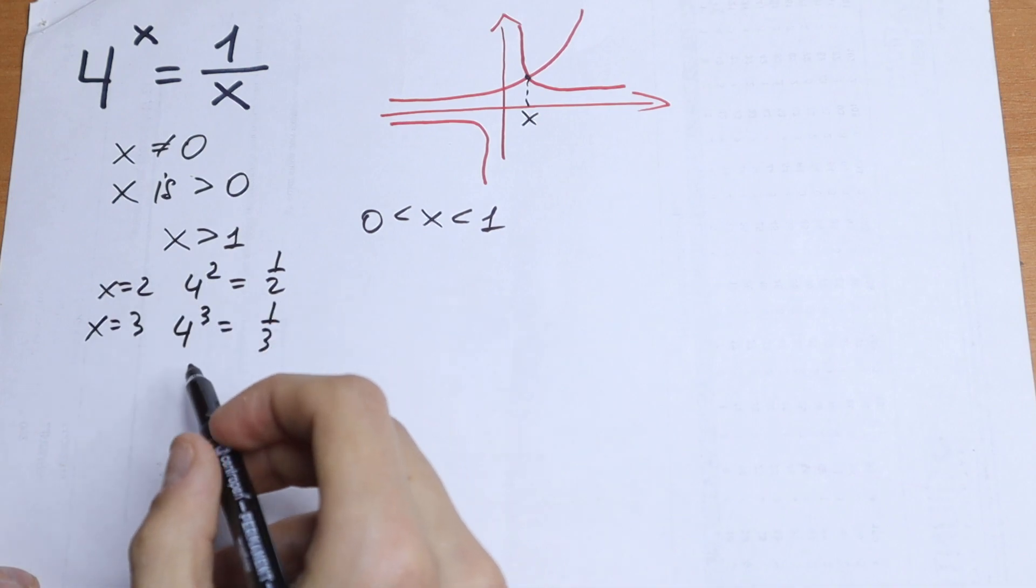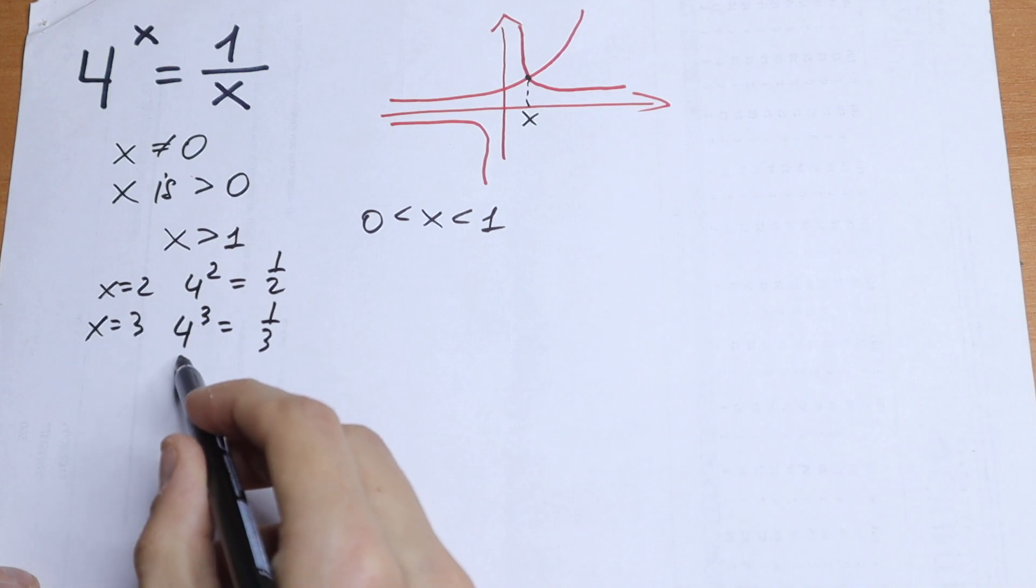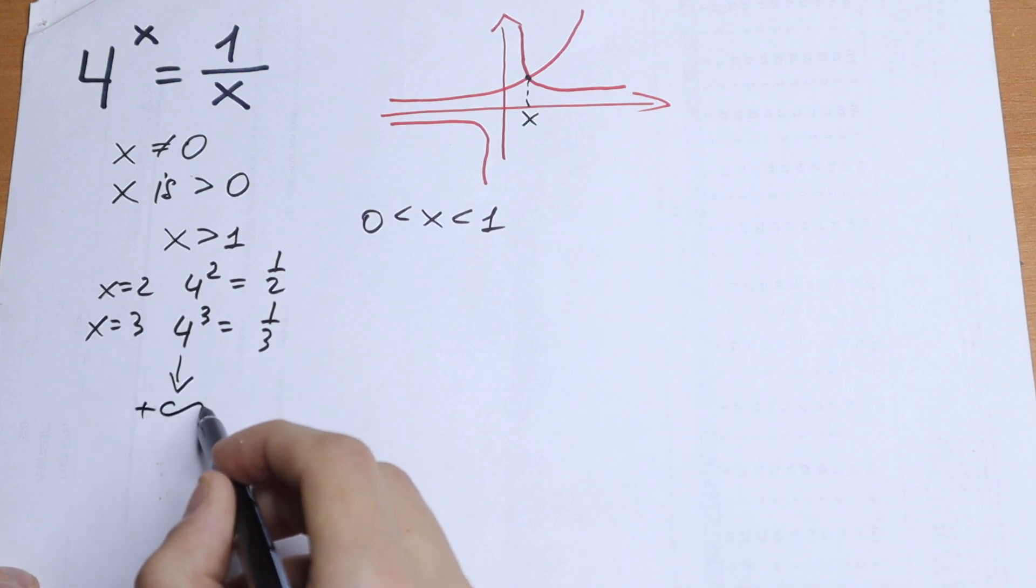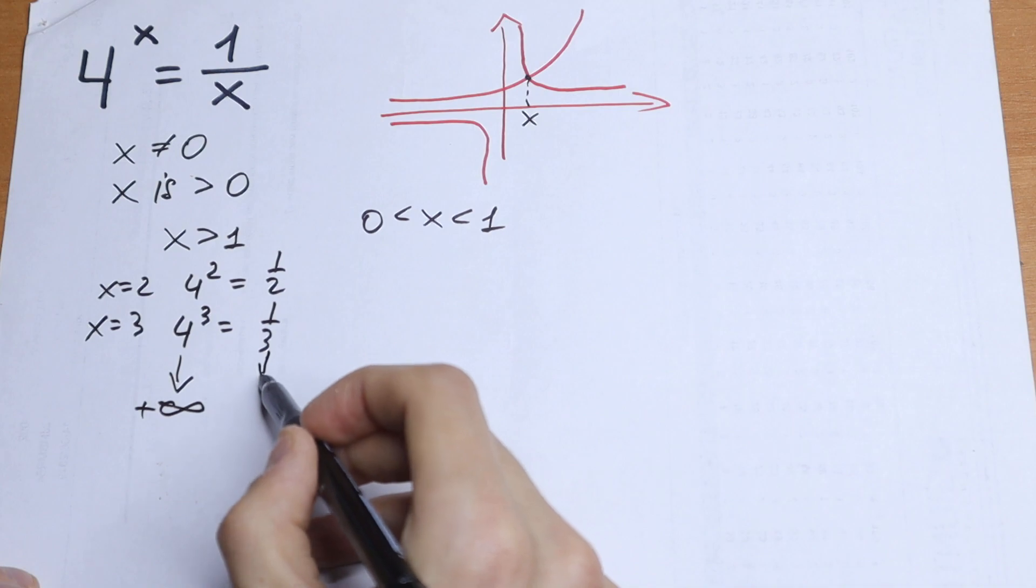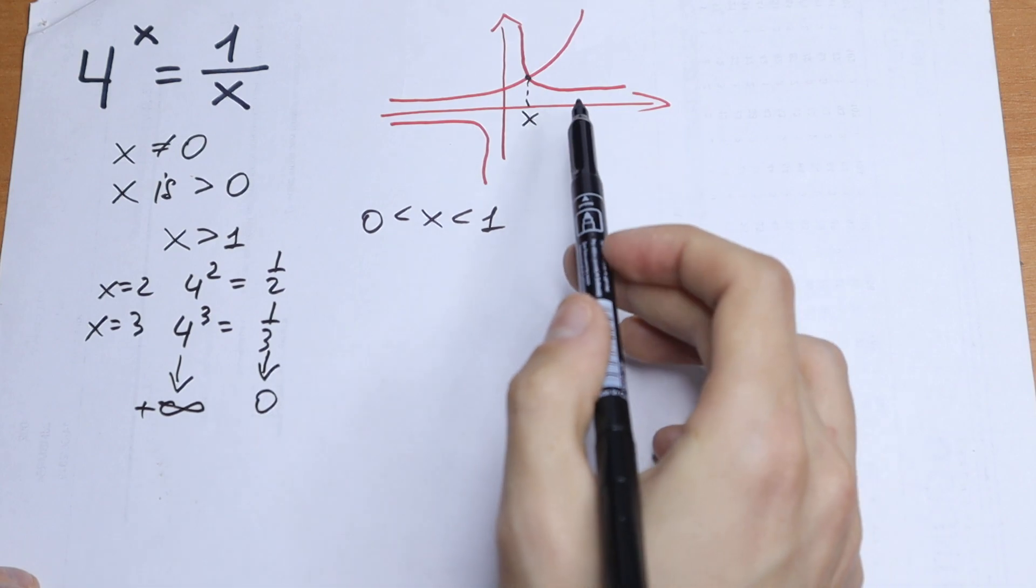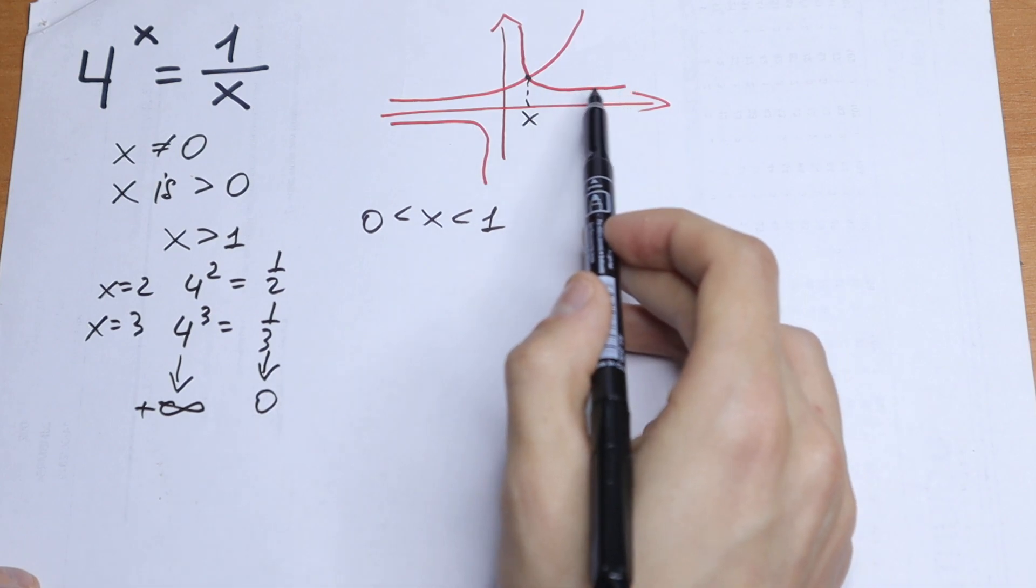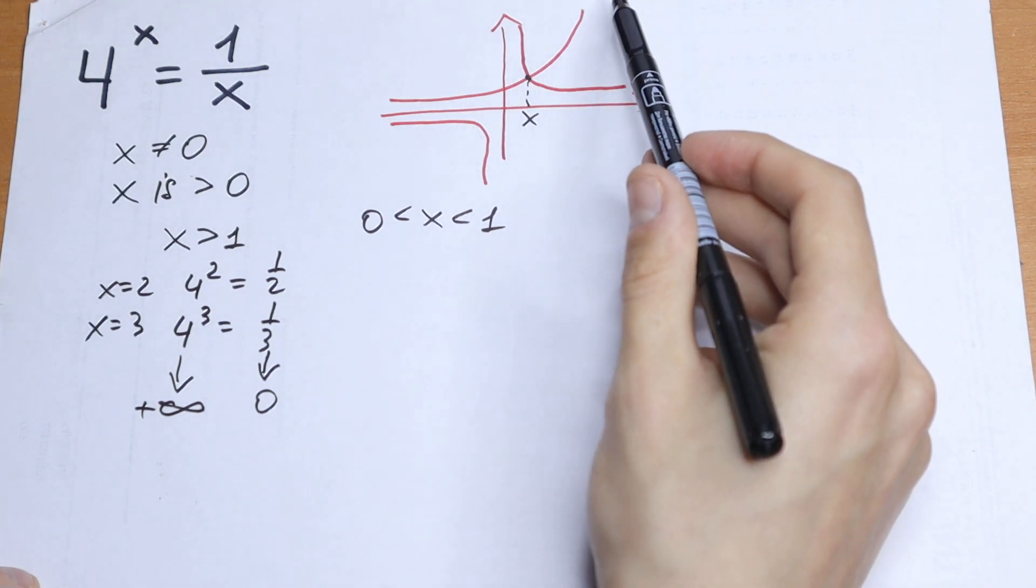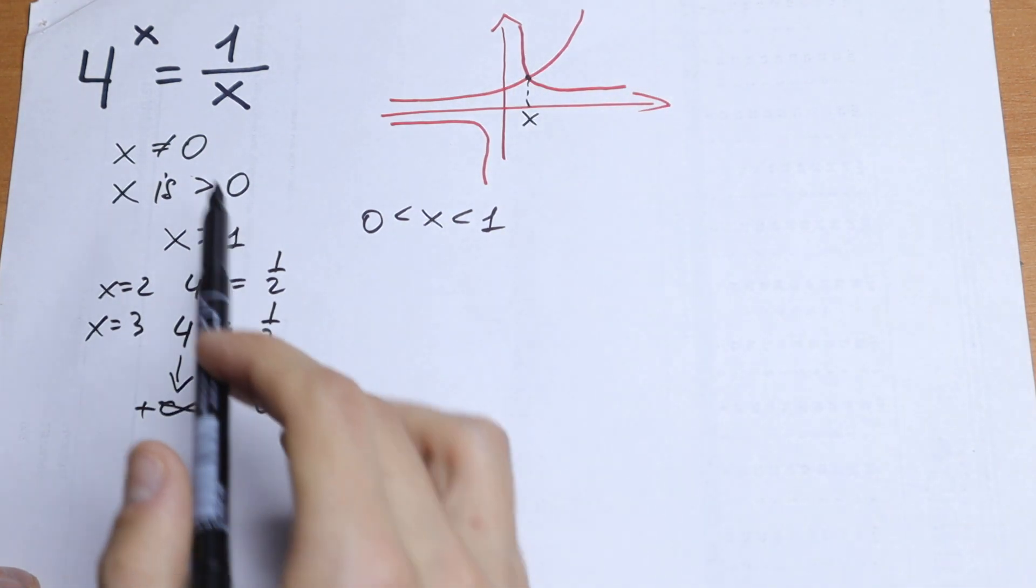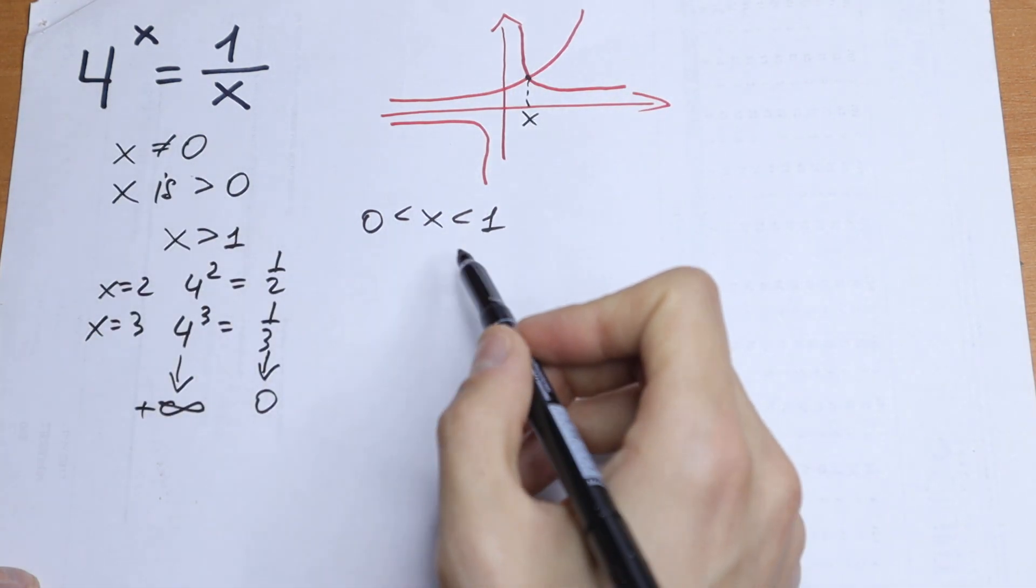So as you can see, these on the left go of course to plus infinity, and these of course go to 0. As you can see right here, we probably go to 0 and our exponential function goes to plus infinity. So this is not our case. Let's go right here.